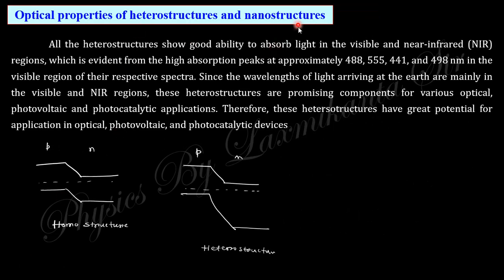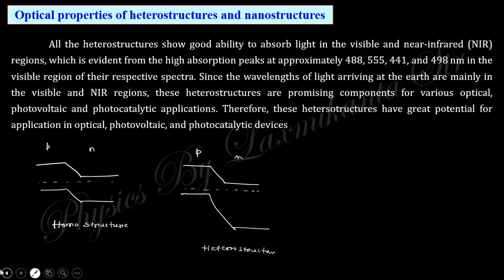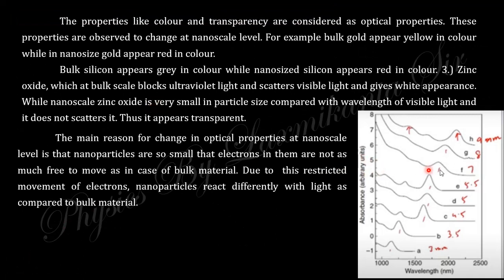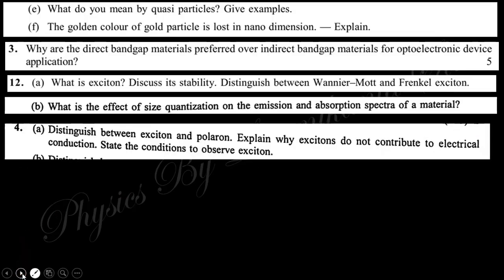Regarding the optical properties of heterostructures and homostructures: a homostructure is like a p-n junction where the band gap is uniform throughout the material. A heterostructure has a non-uniform band gap — for example, two different materials joined together. Because there are two different band gaps, there will be two distinct absorption and radiation features. For nanostructure materials, as you reduce the size, the absorption spectra shift to shorter wavelengths, meaning higher energy, which corresponds to an increase in band gap.